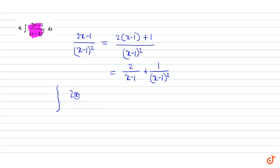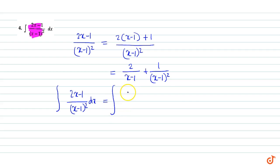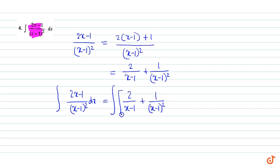The integral of 2x minus 1 divided by x minus 1, the whole square, into dx, is equal to the integral of 2 divided by x minus 1, plus 1 by x minus 1 the whole square, into dx.